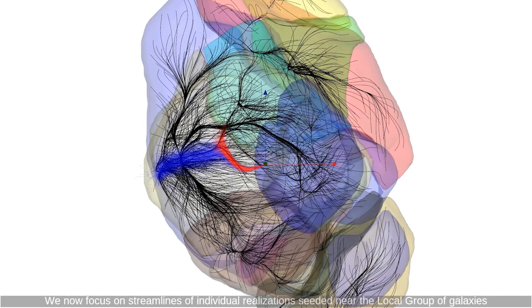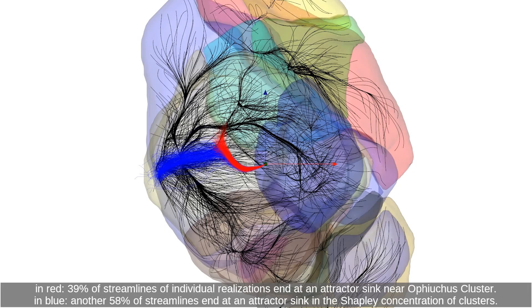We now focus on streamlines of individual realizations seeded near the local group of galaxies. In red, 39% of streamlines of individual realizations end at an attractor sink near Ophiocos cluster. In blue, another 58% of streamlines end at an attractor sink in the Shapley concentration of clusters.